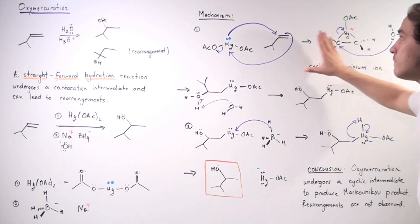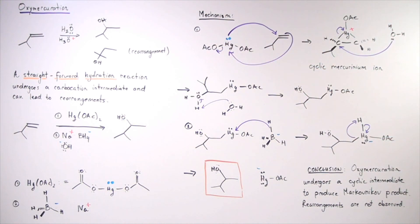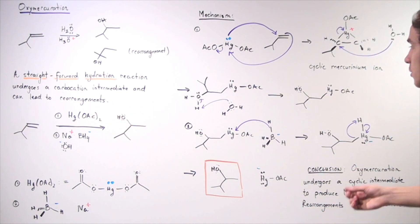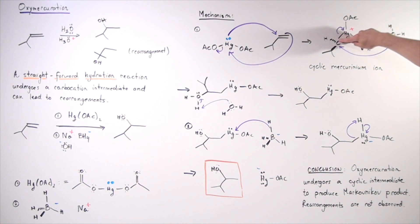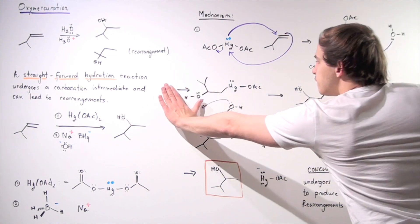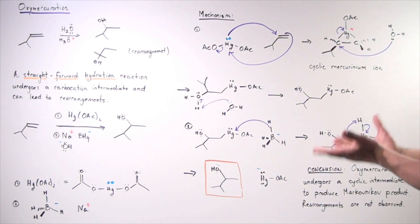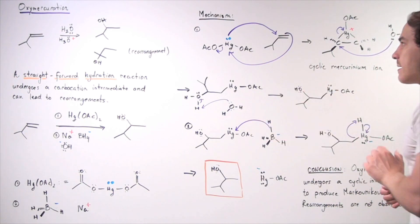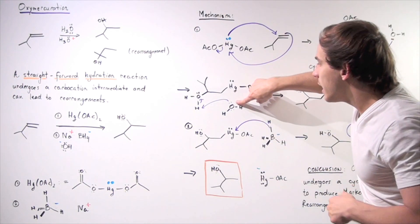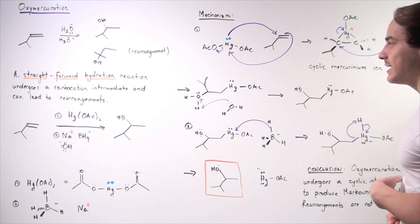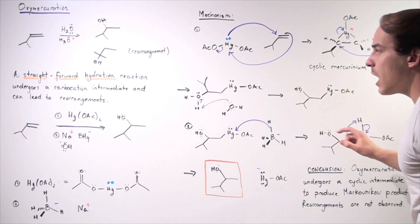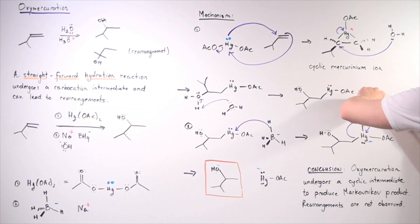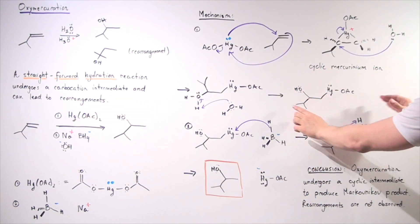In the next step of the oxymercuration reaction, water acting as a nucleophile attacks the more substituted carbon, displacing that bond and forming a second intermediate. Then, in the third step, another water molecule acts as a base, removing a proton and forming the final product of the first step — an isolable intermediate with the mercury still attached.